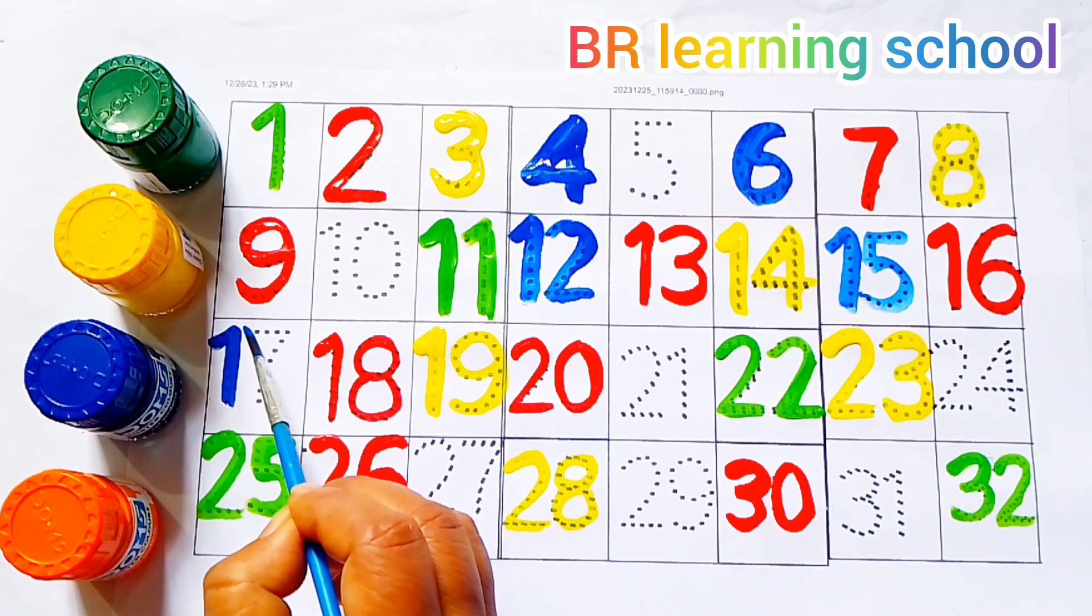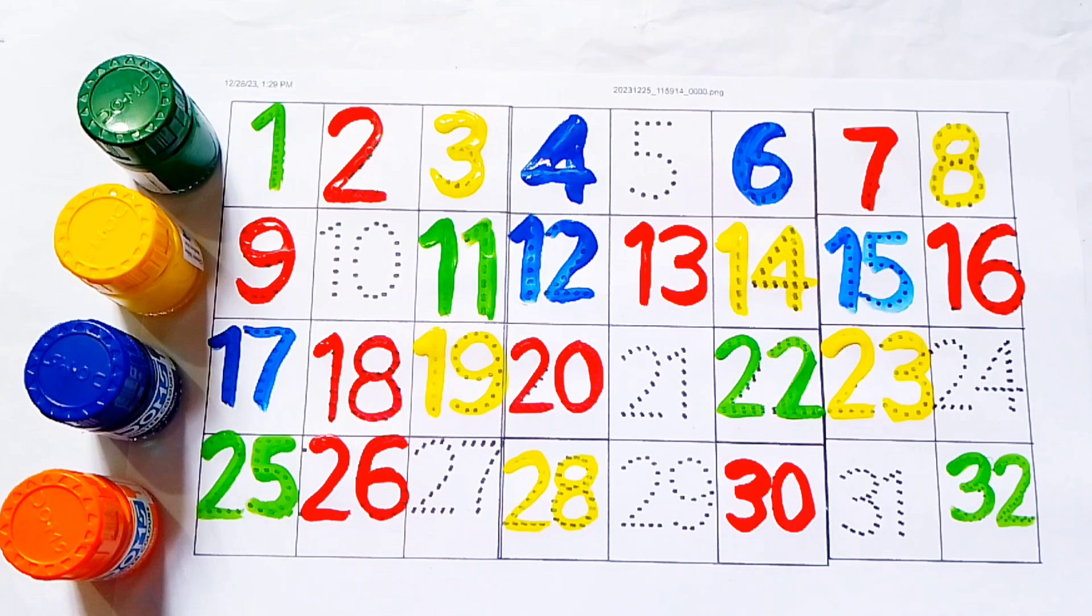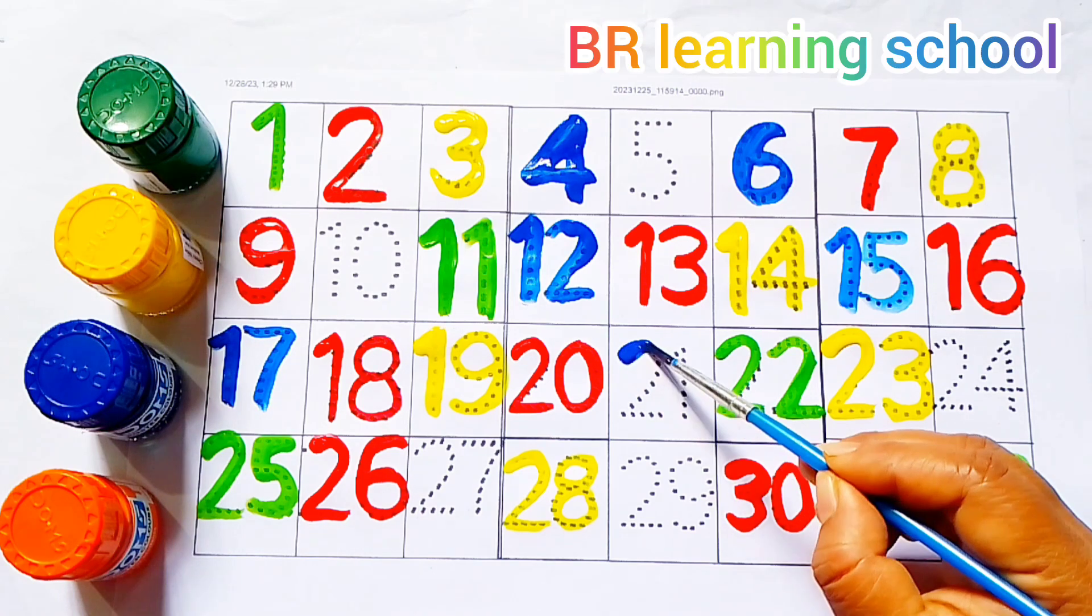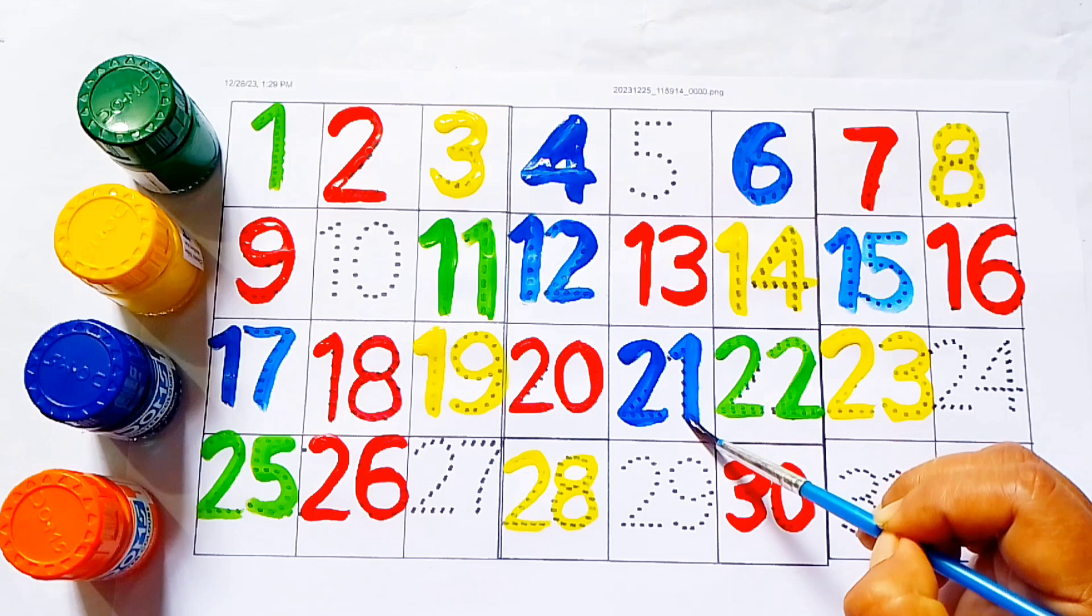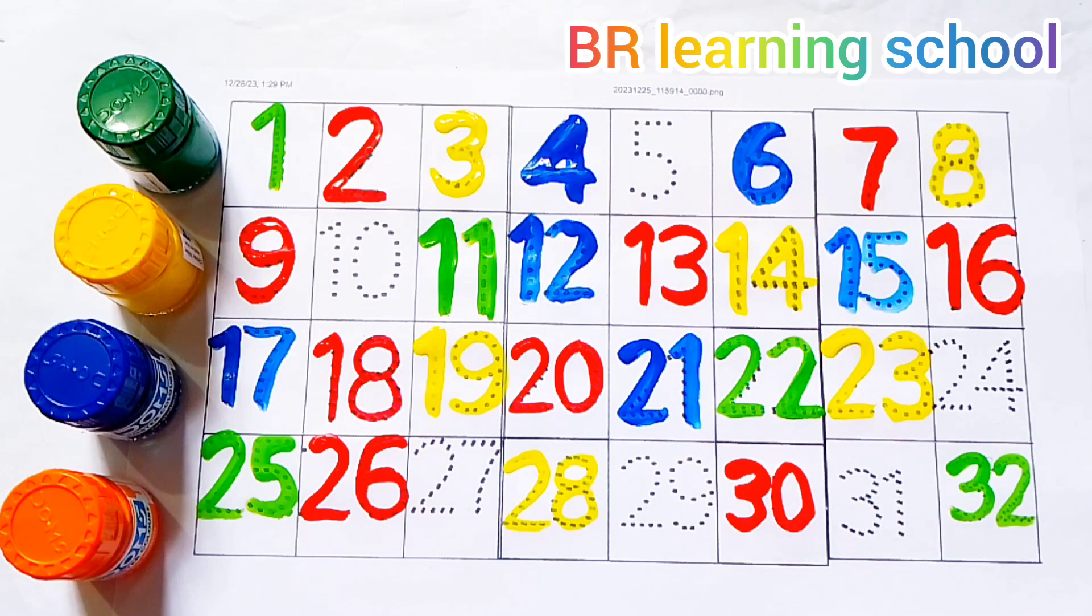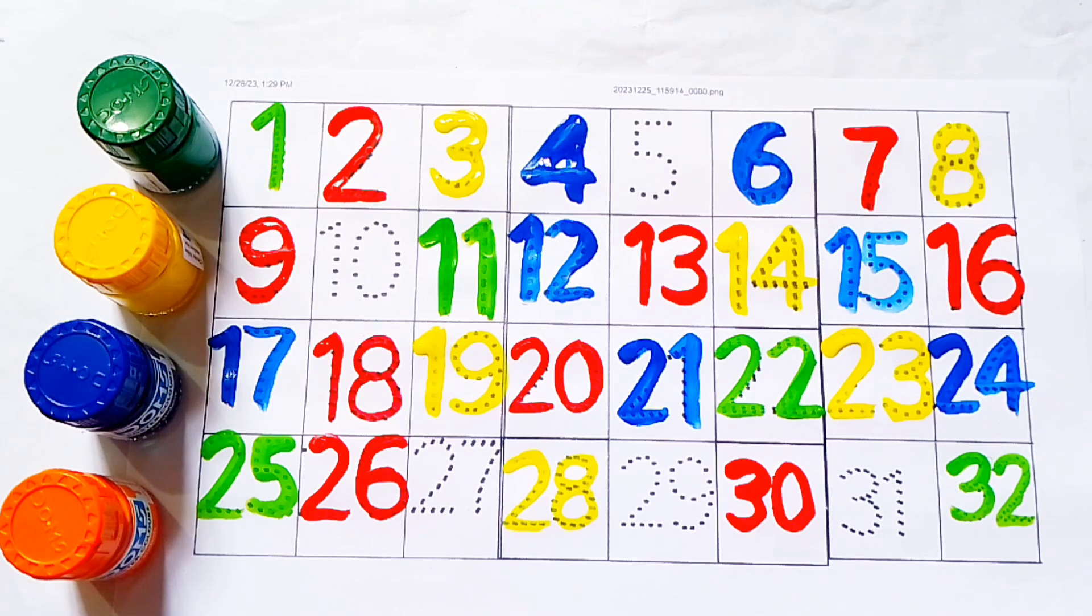17, 17. This is number 17. 21, 21. 2, 1, 21. 2, 4, 24. 24.